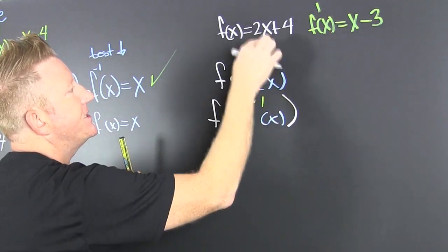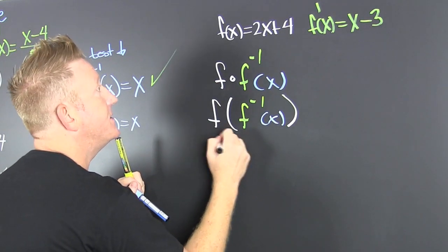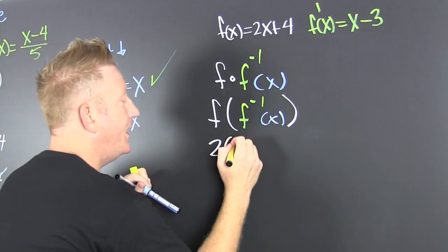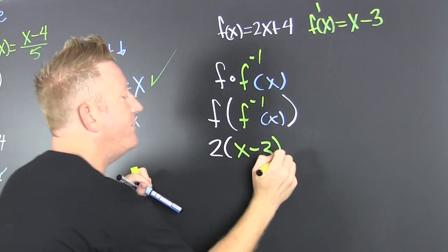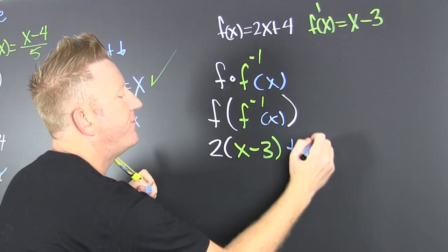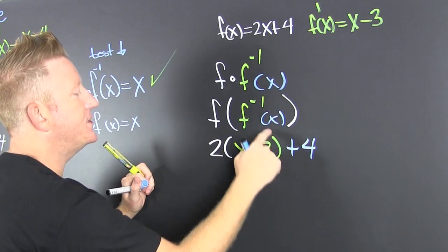So then I'm gonna have a 2 times, wait for it, everywhere I see an x I'm gonna put an (x minus 3) plus 4. Sure, it's that piece right there. I guess that should have been white and that should have been white also.